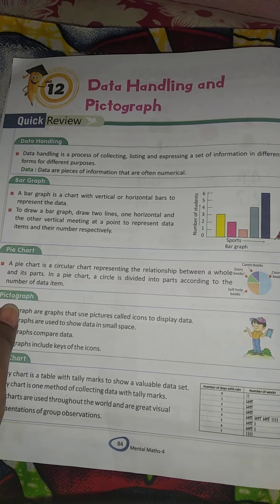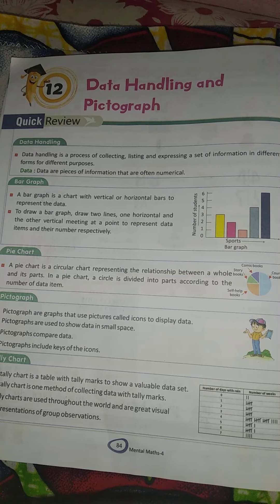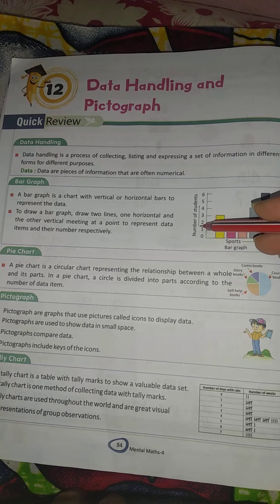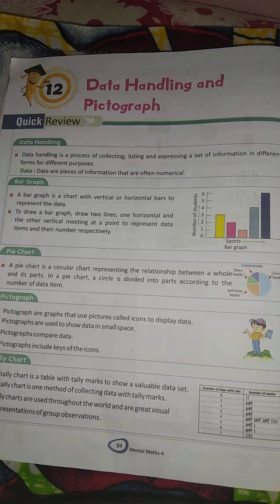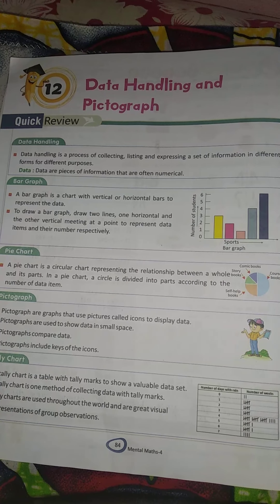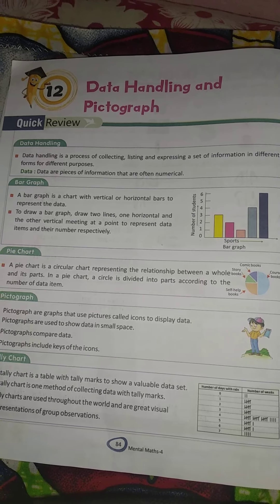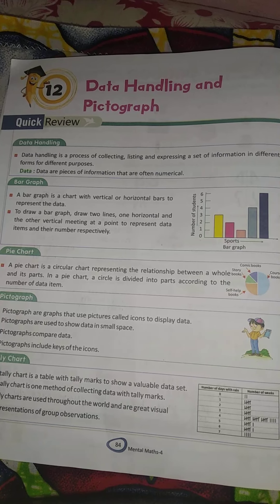Suppose data is given here about how many students are in sports. Which sport has how many students? For example, we have 100 students, and we want to know how many are in cricket or volleyball. We write them down — that is data handling.